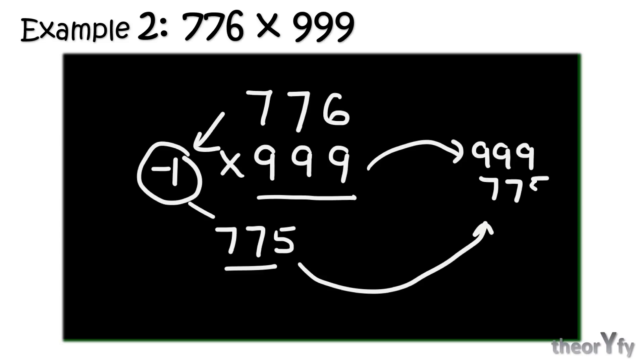999 minus 775. Let's solve it: 9 minus 5 is 4, then 9 minus 7 is 2, and 9 minus 7 is 2. So as you can see we have solved the RHS and our final answer is there: 775224. So you got it till now. Let's go for a difficult number now.